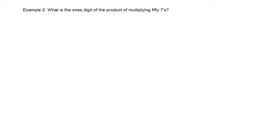Let's look at another example — a very common type of problem in many math contests. What is the ones digit of the product of multiplying 57s? That means we are multiplying seven fifty times, and the product is going to be a huge number. But what we want to find is just the ones digit — we don't care about the full number.